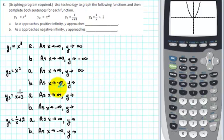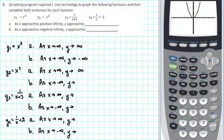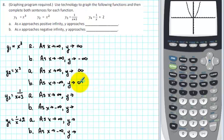For part b, we're investigating the left end behavior. As x goes to minus infinity, as we trace along the function moving to the left, we see that we're also going up, increasing without boundary. That means the y values are approaching positive infinity. So as x goes to minus infinity, y goes to positive infinity.